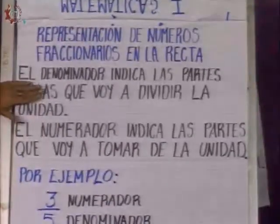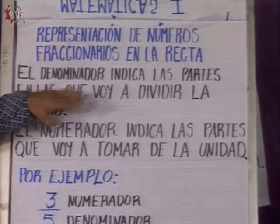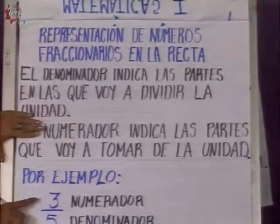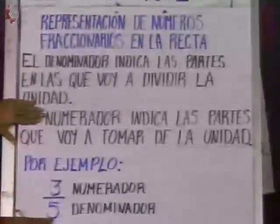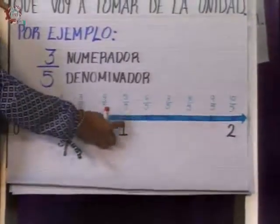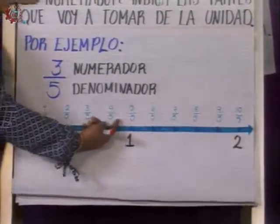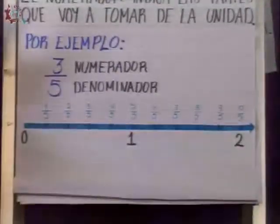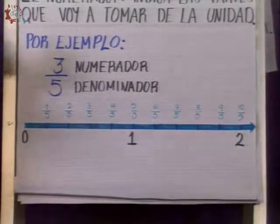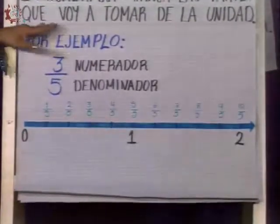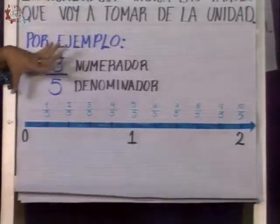Looking at this, we say the denominator indicates the parts into which I am going to divide my unit. In this case, in my example of 3 fifths, the denominator indicates that on the number line I am going to divide each unit into five equal parts — these parts must be equal, equitative. And the numerator — the number on top — indicates the parts that I am going to take from that unit.